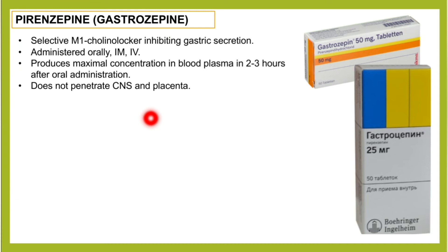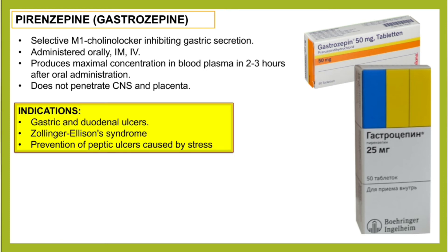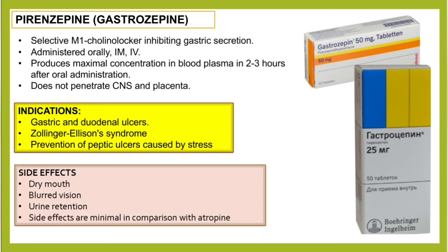Pyrenzepine produces maximal concentration in blood plasma two to three hours after oral administration. It does not penetrate the central nervous system and does not cross the placenta. Indications include gastric and duodenal ulcers, Zollinger-Ellison syndrome, and prevention of peptic ulcers caused by stress.